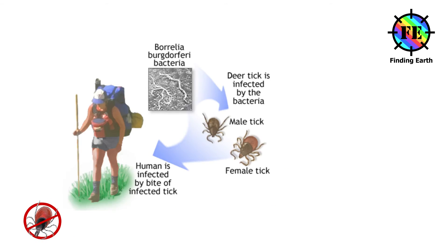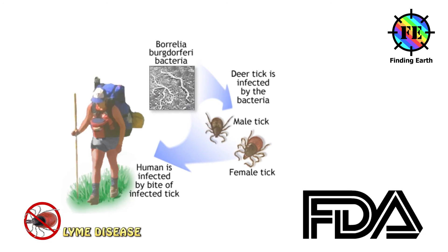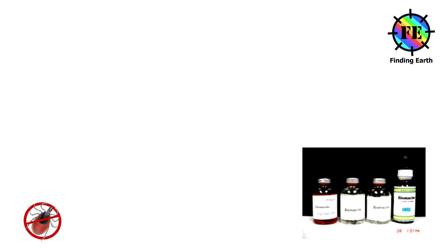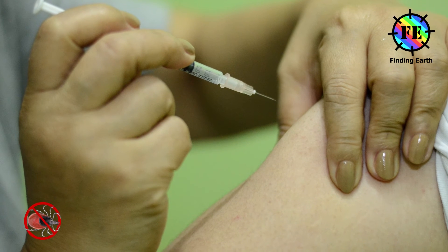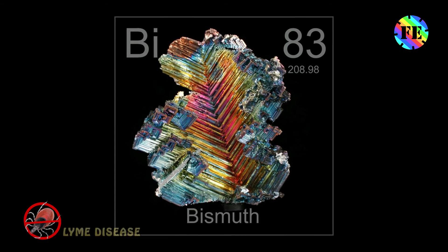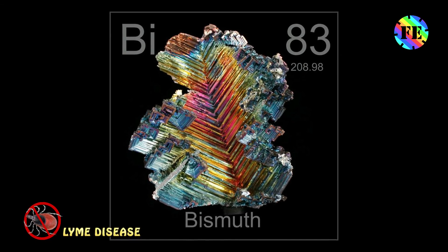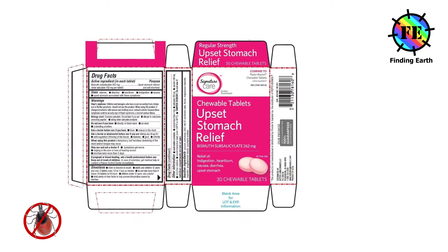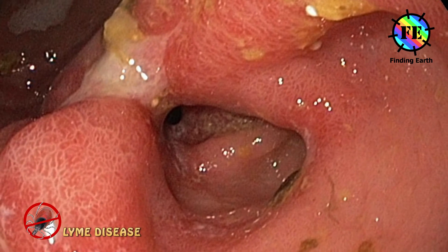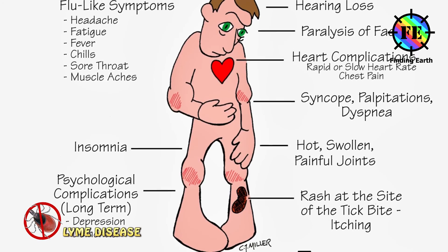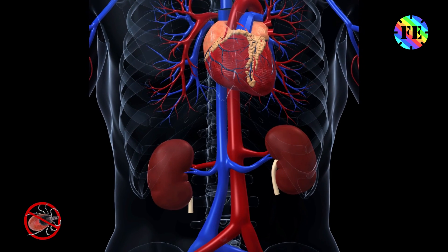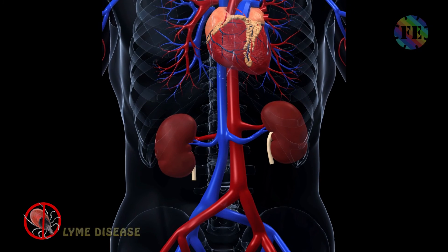The Food and Drug Administration warns against the use of bismacine, an injectable compound prescribed by some alternative medicine practitioners to treat Lyme disease. Bismacine, also called chromacine, contains high levels of the metal bismuth. Although bismuth is safely used in some oral medications for stomach ulcers, it is not approved in injectable form or as a treatment for Lyme disease. Bismacine can cause bismuth poisoning, which may lead to heart and kidney failure.